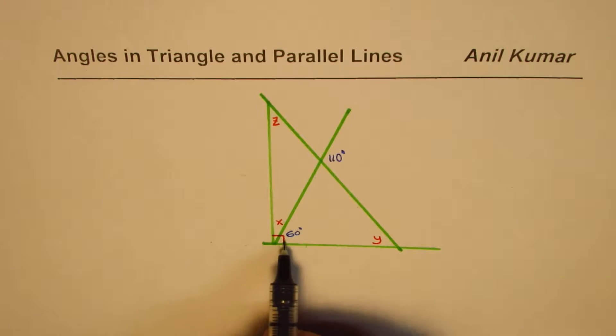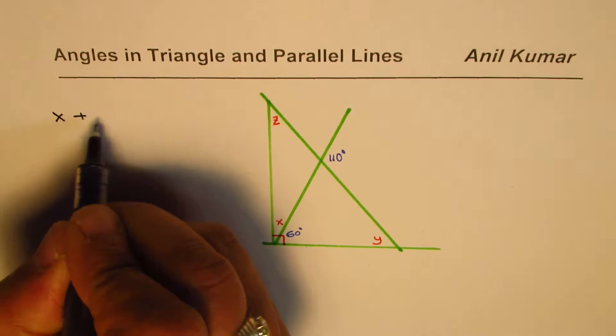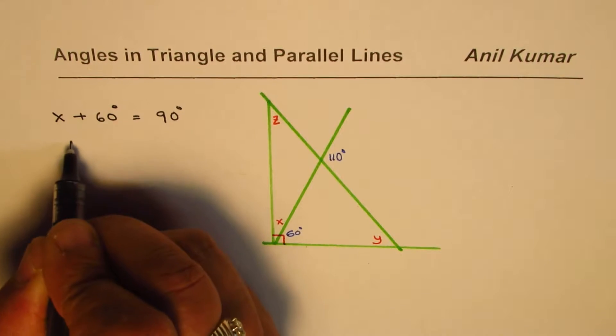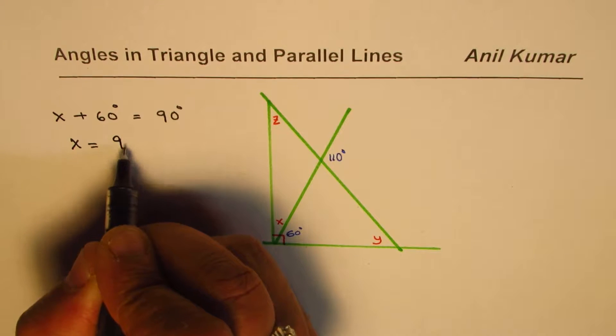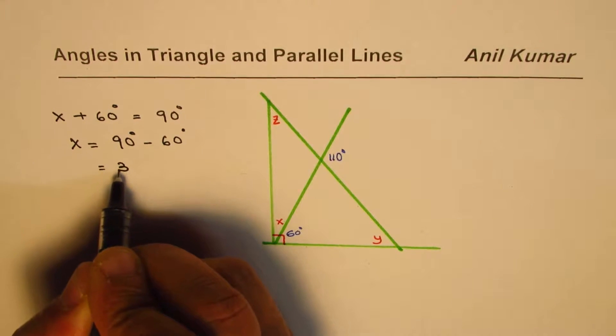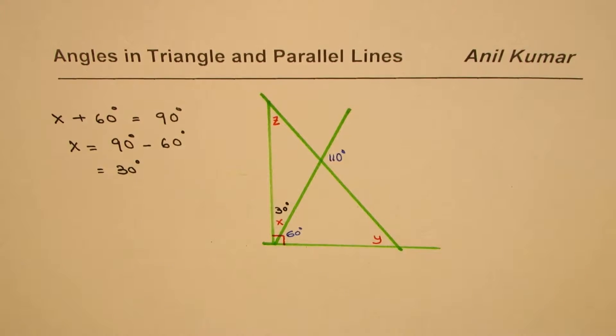You should note that here we have 90 degrees. That is to say that x and the 60 degree angle form 90 degrees. They are complementary angles. So we can say that x plus 60 degrees equals 90 degrees. Therefore, x equals 90 degrees minus 60 degrees, which gives us a value of 30 degrees.